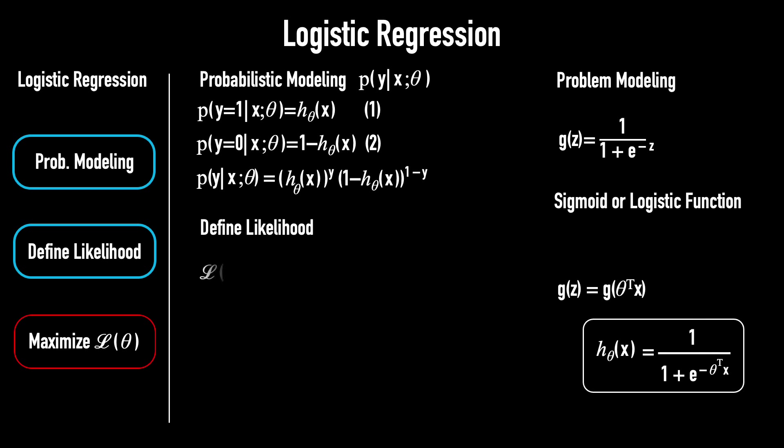As previously defined, the likelihood of θ is the probability of the data. It equals the product of the probabilities of all examples from i = 1 to m. Then, by substituting the equation we found above, we get the formula to calculate the likelihood.